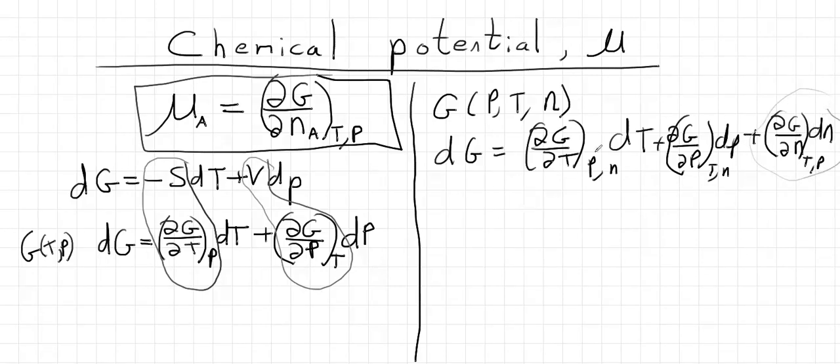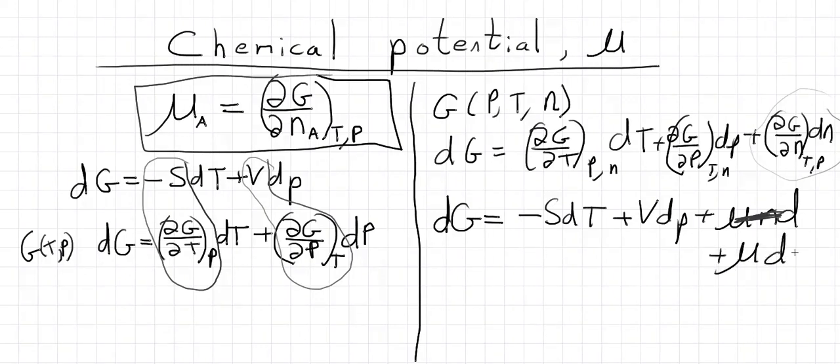Well, it's kind of unwieldy to write all these partial derivatives. So we normally write them out with the names for the partial derivatives. So we have the change in the Gibbs function with pressure over temperature. We already said that was the negative of the entropy, so we have minus SdT. For this term over here, we have plus VdP. And finally, we have plus μdN.